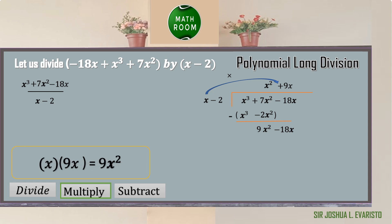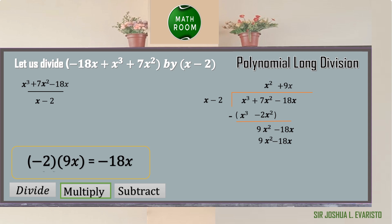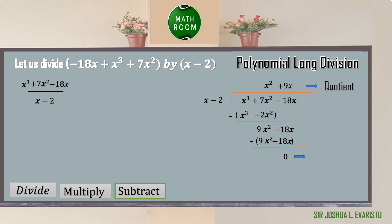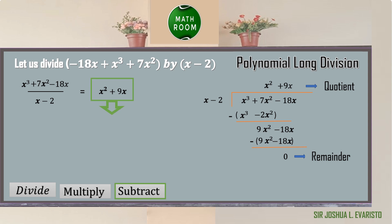Proceed with division: 9x squared divided by x equals 9x. Multiply: x times 9x equals 9x squared, and negative 2 times 9x equals negative 18x. Subtract: 9x squared minus 9x squared equals 0, and negative 18x minus negative 18x equals 0. Therefore, the quotient is x squared plus 9x and we have no remainder. The answer is simply x squared plus 9x.